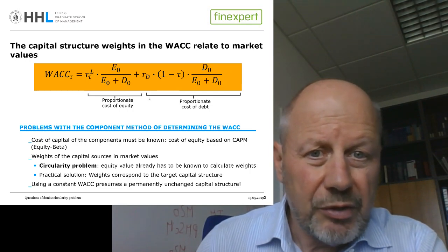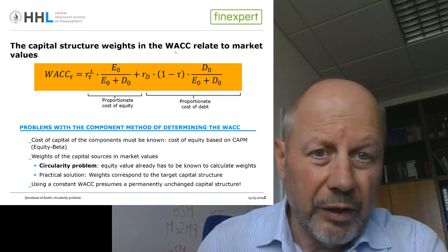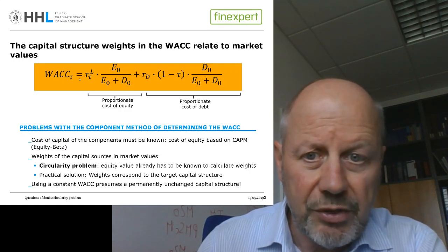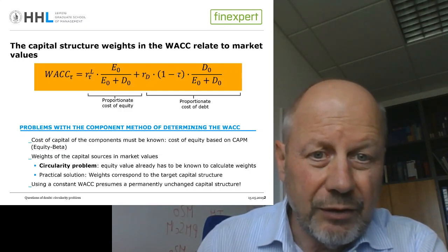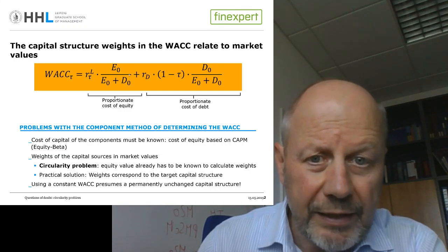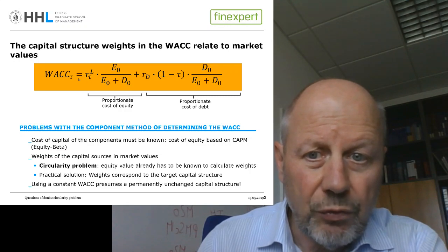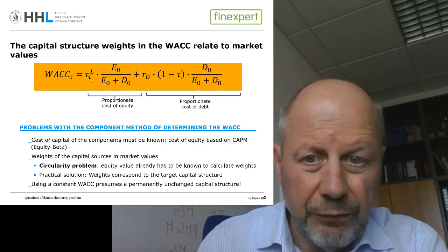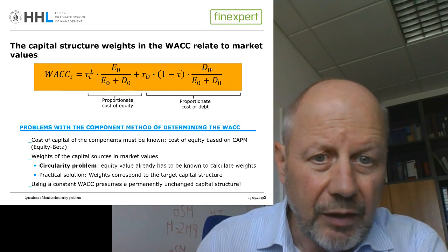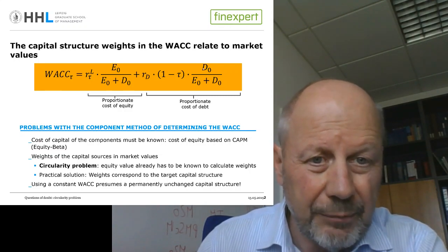The circularity problem is closely related to the quite popular WACC approach. Here you see the equation for the WACC. The WACC, as the name suggests — weighted average cost of capital — is the cost of equity and the net cost of debt, the average over the two. The weights for calculating this average are equal to the capital structure of the firm. The weight of equity is equity over equity plus debt, and the weight of the cost of debt is debt over equity plus debt.